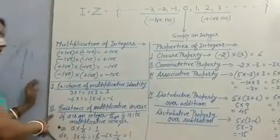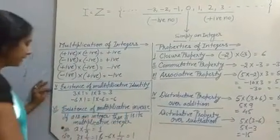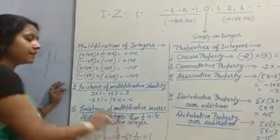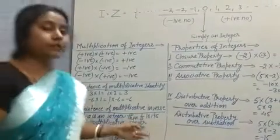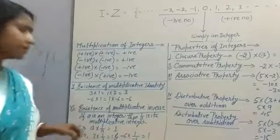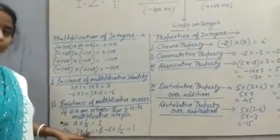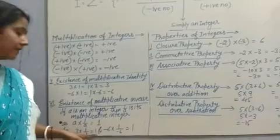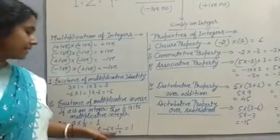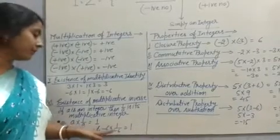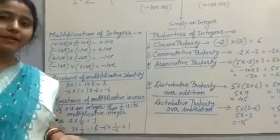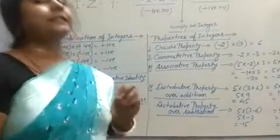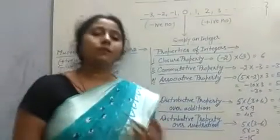The sixth property is the existence of multiplicative inverse. If A is any integer, its multiplicative inverse is 1 by A. Suppose any integer is 3; if we multiply 3 by 1 by 3, we get 1. Since it's minus 6, its multiplicative inverse is 1 by minus 6, and 3 multiplied by 1 by 3 equals 1. So if any integer A is there, its multiplicative inverse is 1 by A.